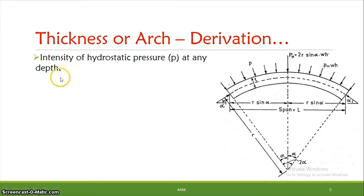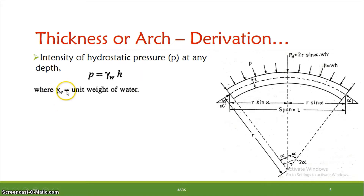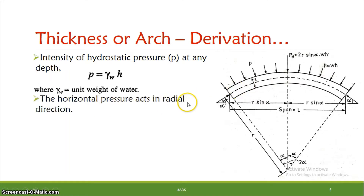The intensity of hydrostatic pressure p at any depth is calculated as γ_w × H, where γ_w is the unit weight of water and H is the depth. The horizontal pressure acts in the radial direction, radially towards the center.